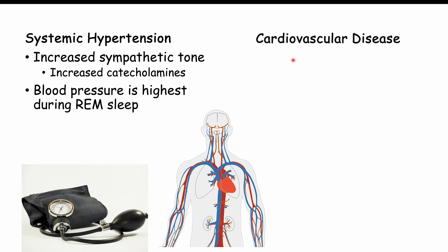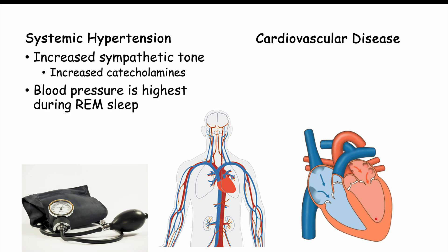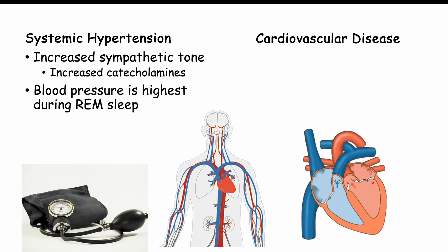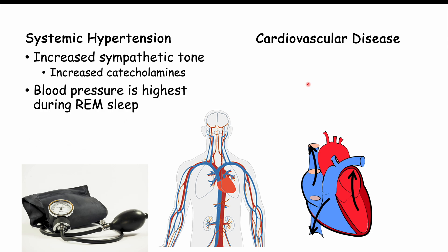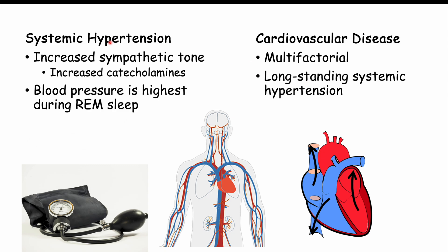This systemic hypertension can lead to eventual cardiovascular disease, more specifically congestive heart failure. Oxygenated blood returns to the left side of the heart — the left atrium and left ventricle — which pumps it into the systemic system. Long-standing systemic hypertension forces the left ventricle to pump harder against elevated pressures, leading to a thickened, more muscular left ventricle.